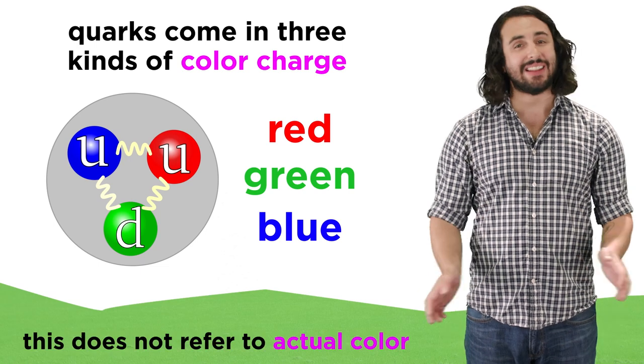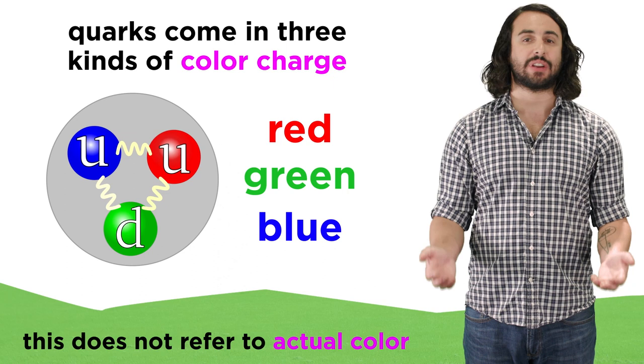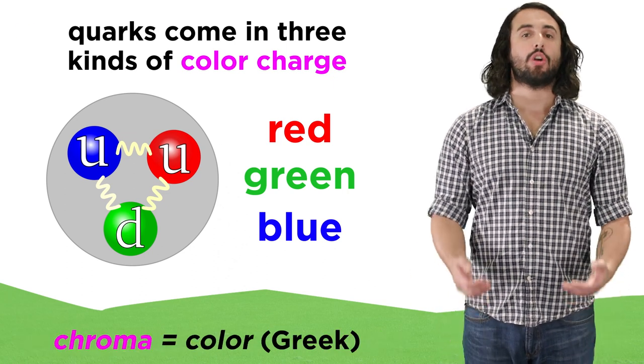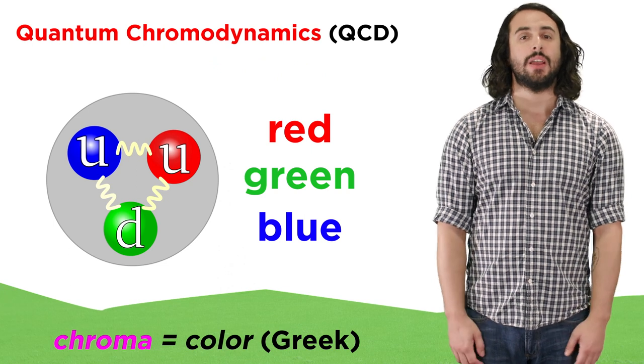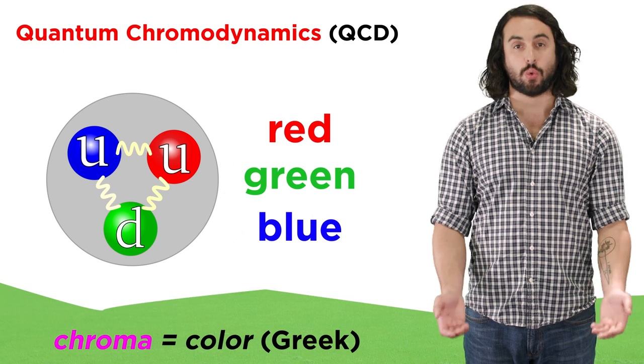This does not have anything to do with the actual phenomenon of color; it is just a way of categorizing quarks. And since chroma means color in Greek, quantum chromodynamics became the name of the quantum field theory that deals with quarks.